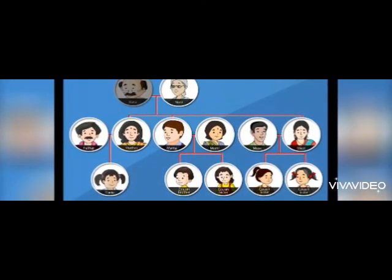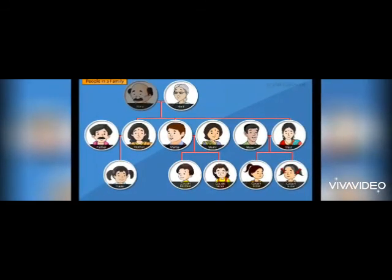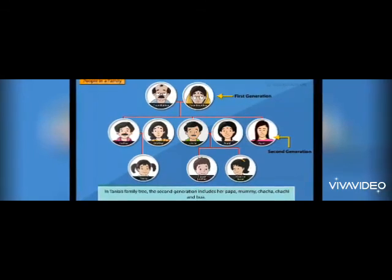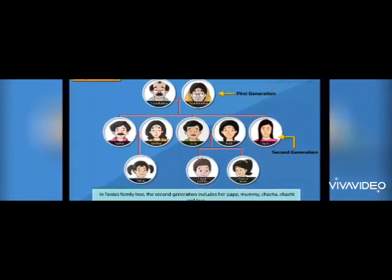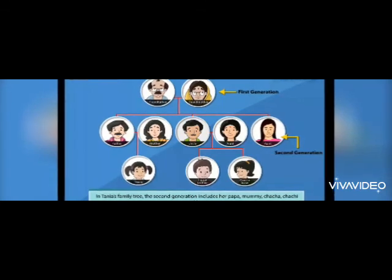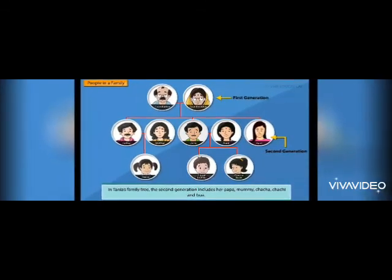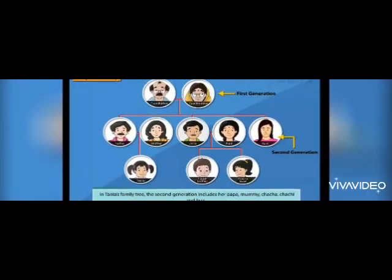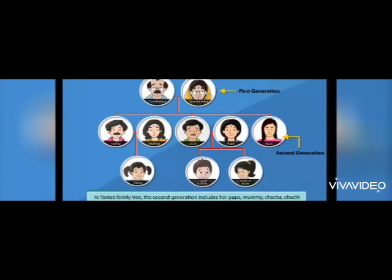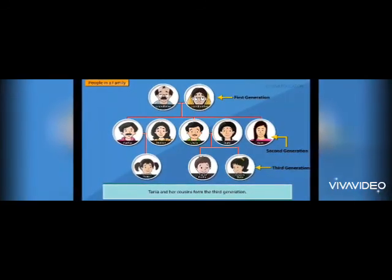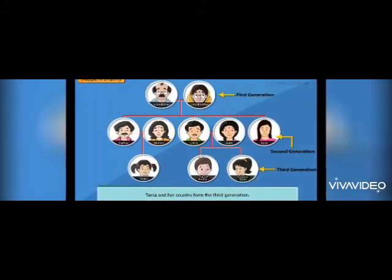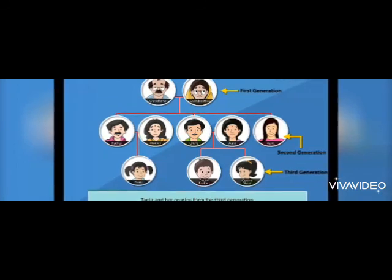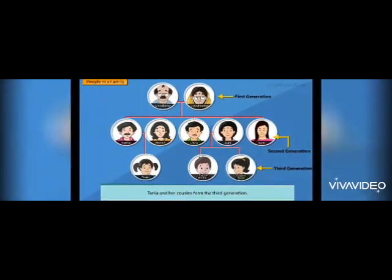So, the first generation of a family includes grandparents only. The second generation of a family includes parents and cha-cha, cha-chi, mama, mami, mausa, and mausi. And the third generation includes children, siblings, cousins, brothers, and sisters.